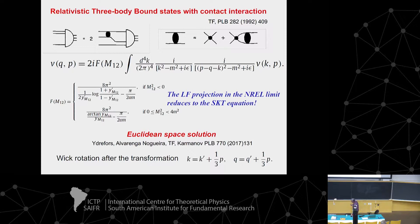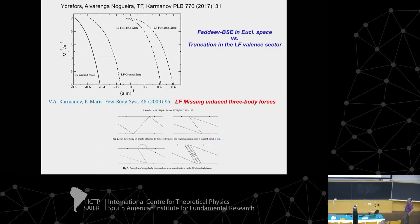I want to show a little bit about the three-body case, where we solved a simple model with a kind of zero-range interaction — a four-dimensional equation. Recently we solved this model in both Euclidean space and Minkowski space to compare solutions. We could also solve for the valence component by making a light-front projection, and in four dimensions in Euclidean space. The mass as a function of the scattering length — which is the only input of this model — shows a huge difference between the full Bethe-Salpeter and the light-front valence-only case.